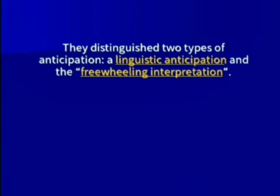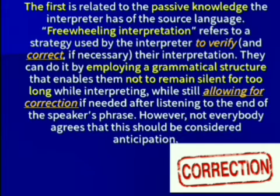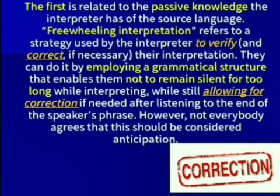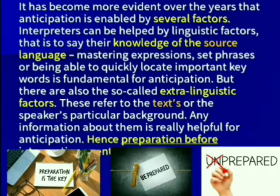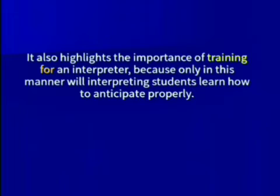Two types of anticipation are distinguished: linguistic anticipation and freewheeling interpretation. The first depends on linguistic factors, while the second depends on the interpreter's own desire or judgment. The first type is related to passive knowledge — a strategy used by the interpreter to verify meaning using grammatical structures or to correct mistakes.